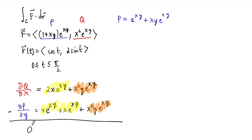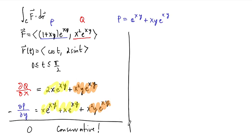So we find that our vector field is conservative. The fundamental theorem of path integrals tells us it's easy to compute the integral of a gradient. Since our vector field is conservative, we can find a function whose gradient equals this vector field. That means we need to undo the derivatives that come from the gradient.